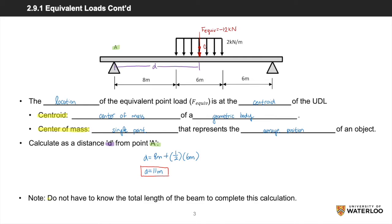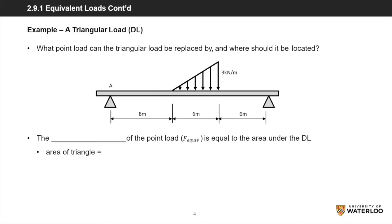Note that the entire length of the beam is not necessarily needed when completing these calculations. The second example is a triangular load, or triangular DL. Consider the same question: what point load can the triangular load be replaced by, and where should it be located? In the diagram, the distance from point A is 8 meters to the left end of the load, the load is 6 meters in length, and the right end is 6 meters from the right beam support. The DL has a downwards force of 0 to 3 kN per meter from left to right along the 6 meter length.